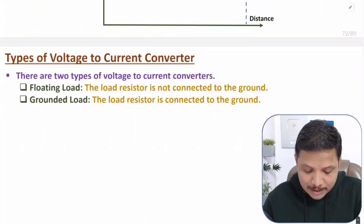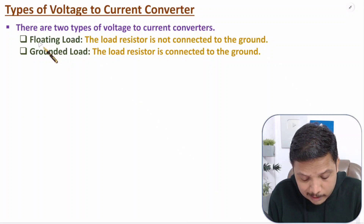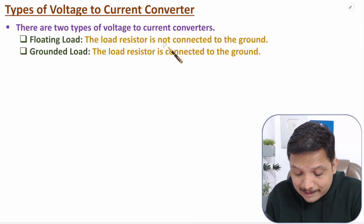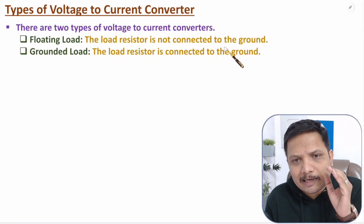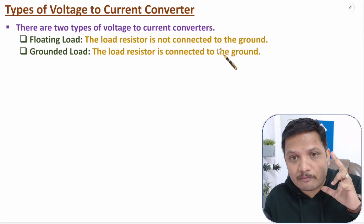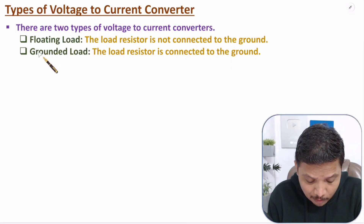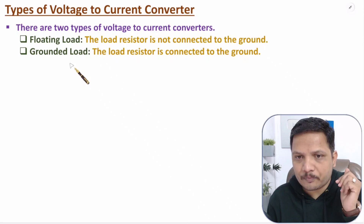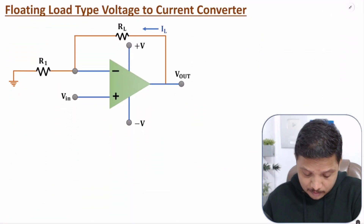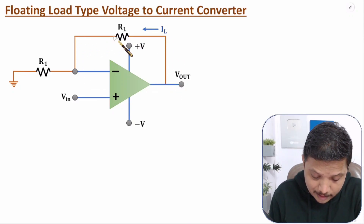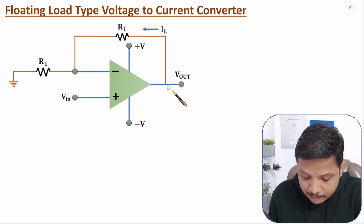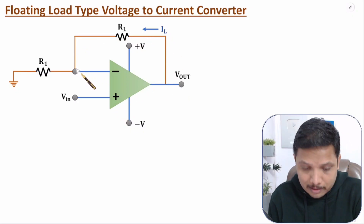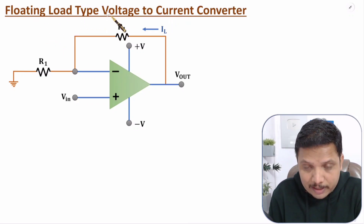There are two types of V2I converters: floating load and grounded load. Floating load means the load resistance is not connected with ground — it has no ground reference. In the grounded load type, the load resistance is connected with ground. Let us first look at the floating load type V2I converter, where the load resistance is connected at the output and at the inverting terminal of the op-amp, not to ground.